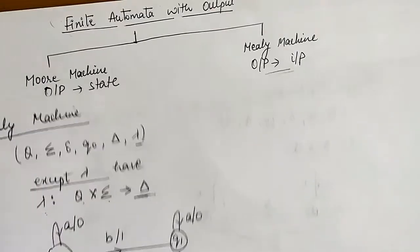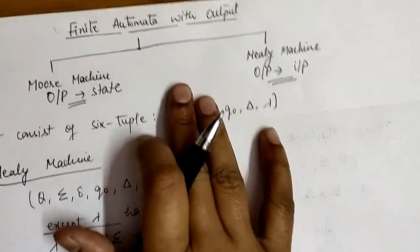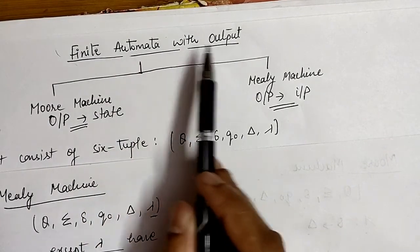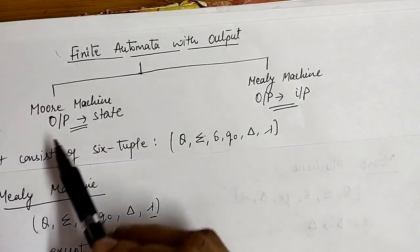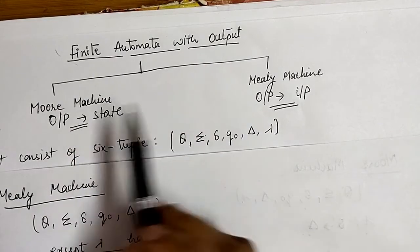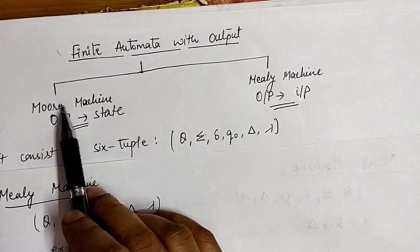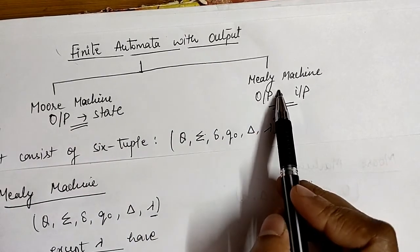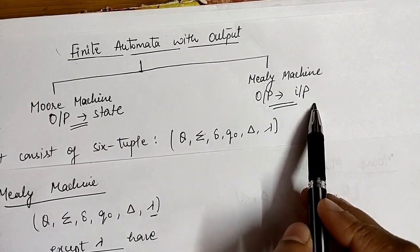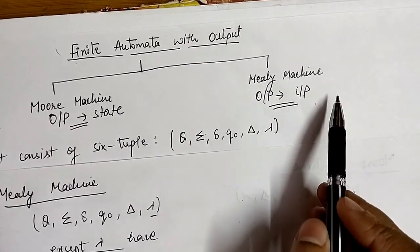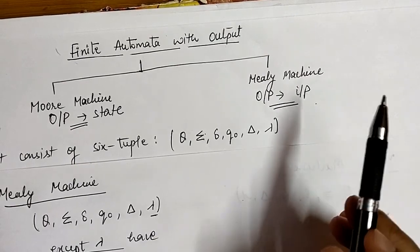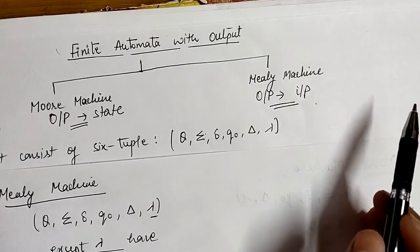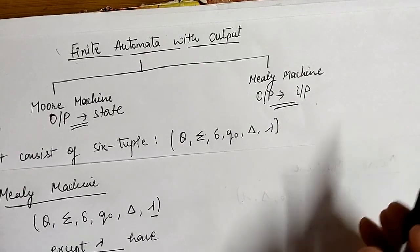So this is all about Mealy and Moore machines. Both machines come under the category of finite automata with output. The basic difference is that in Moore machine the output is associated with the state, and in Mealy machine the output is associated with an input. In the next video we will discuss one example on the basis of these two machines. Keep watching, thank you so much.